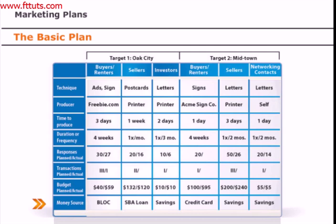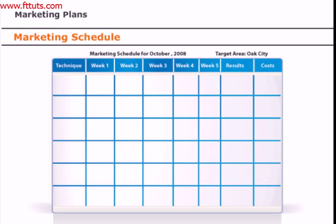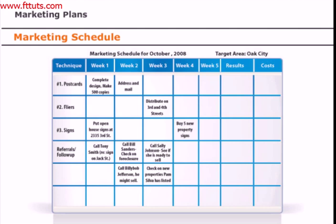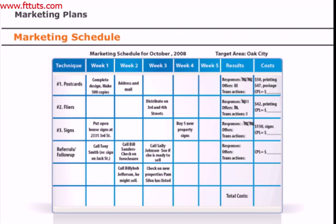The funding source could be a savings account, a small business loan, or even a car you're planning to sell. Keeping this record helps you ensure that you do not spend more than you have and that you know where the money is going. Consider putting back a portion of the proceeds from all your deals into your marketing budget. The second part of your marketing plan is the schedule — tracking exactly what you plan to do and when. Make a schedule each month for each target area, listing the techniques you plan to use and what you plan to do each week to get material published or distributed.